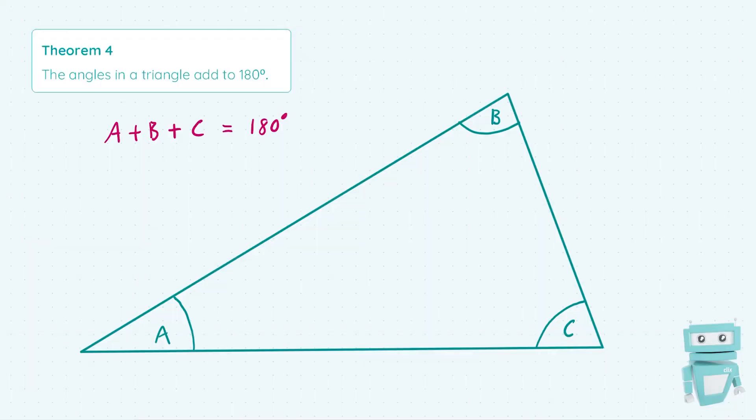This is one of the most fundamental theorems in geometry that you're ever going to need to know. The rule is that given a triangle with angles A, B, and C, A plus B plus C equals 180 degrees.